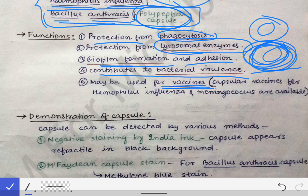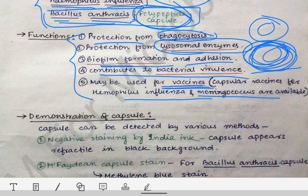The capsule may also be used for vaccine production. There are certain vaccines produced from bacterial capsules — for example, the Haemophilus influenzae vaccine and the Meningococcus (Neisseria meningitidis) vaccines are obtained from the capsules of these respective bacteria.